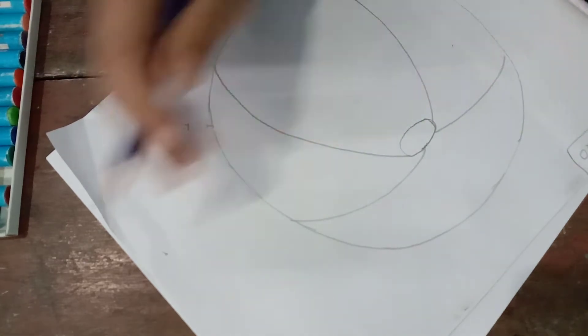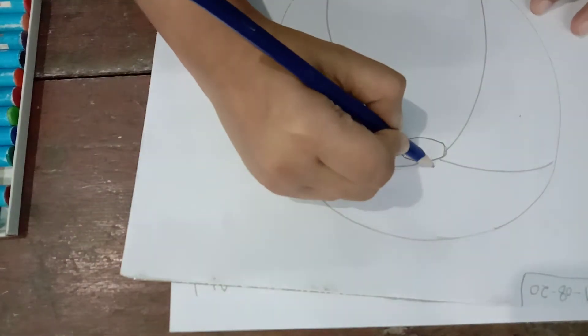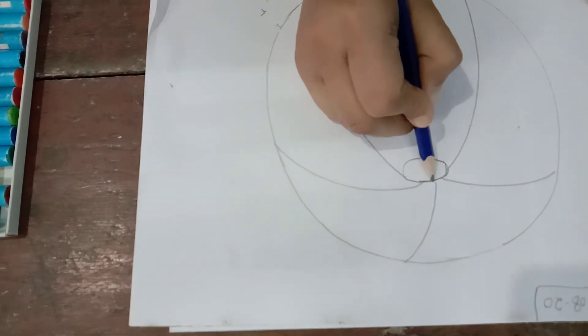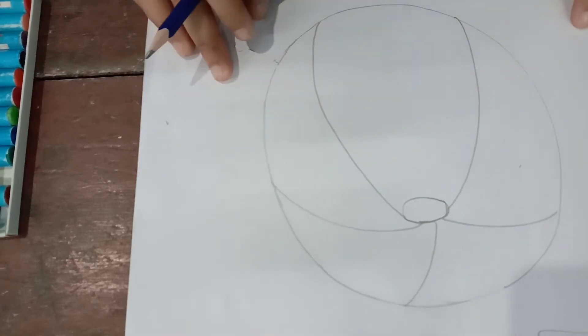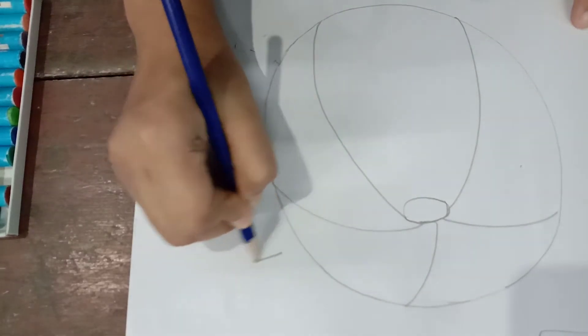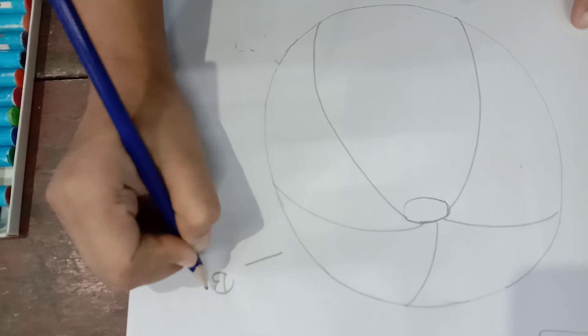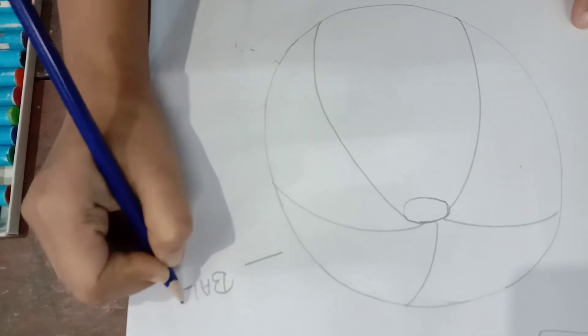One more. Again. Again. Now tell me, what is this? Yes, this is a ball. You write here, B-A-L-L, Ball.